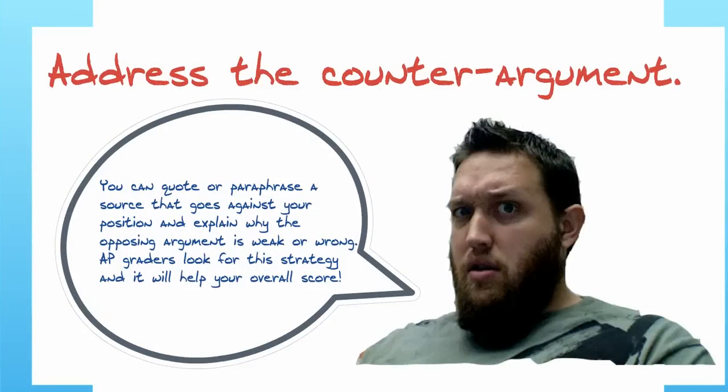Another great thing to do in this type of writing, in the synthesis essay, is to address the counterargument. You can quote or paraphrase a source that goes against your position and explain why the opposing argument is weak or wrong. And that is one of the things that the AP graders really like. They look for that. That shows a certain level of intelligence and sophistication in your writing. So if you're able to, along with using three to four sources, have one of those be the counterargument and you're able to explain why that is wrong and break that down, that's a great strategy to use in your writing.